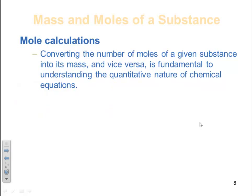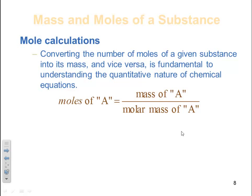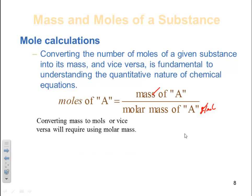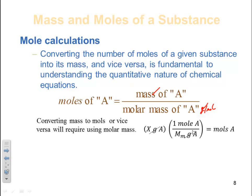Now here's something we will be doing a lot: mole calculations. Converting the number of moles of a given substance into mass and vice versa is fundamental to understanding the quantitative nature of chemical equations. The moles of A equals the mass of A divided by the molar mass of A. Molar mass is grams per mole, so grams cancel, leaving moles. This is a conversion between grams and moles we will repeat over and over throughout this course.